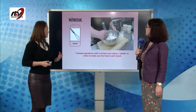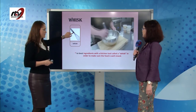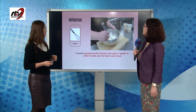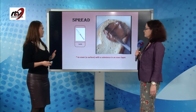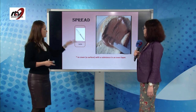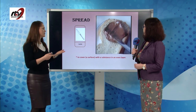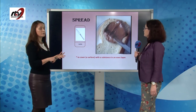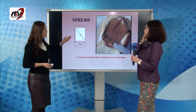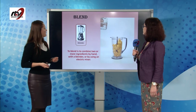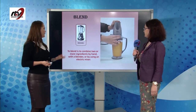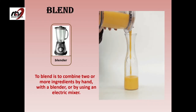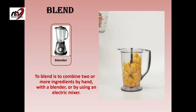To whisk: to beat ingredients with a kitchen tool called a whisk, in order to make sure the food is well mixed. To spread: to cover a surface — here you have a slice of bread — with a substance in an even layer. Like you spread Nutella, butter, jam, marmalade, using a knife or maybe a spoon. To blend: to combine two or more ingredients by hand, or using a blender or an electric mixer.